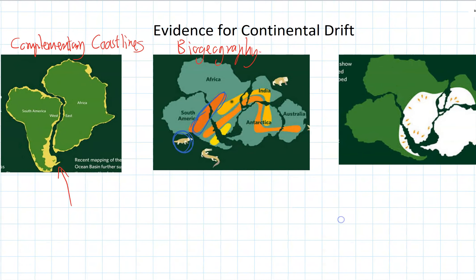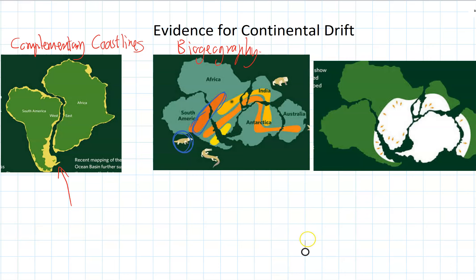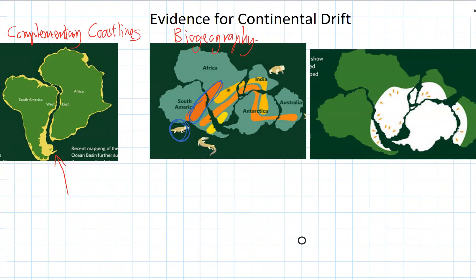The last bit of evidence is looking at the structure of rocks. Scientists can look at scrapes on rocks caused by glaciers and work out the direction glaciers were flowing, and which land was covered by glaciers in the past. For Gondwana, scientists figured out there was once one giant glacier covering all those parts of the continents, moving outwards. That's much more likely than having six separate glaciers. We call this evidence remnants in the rocks.